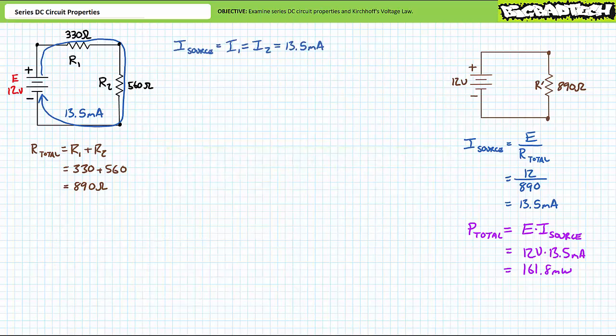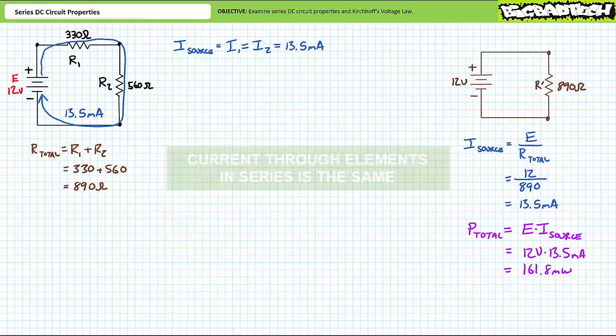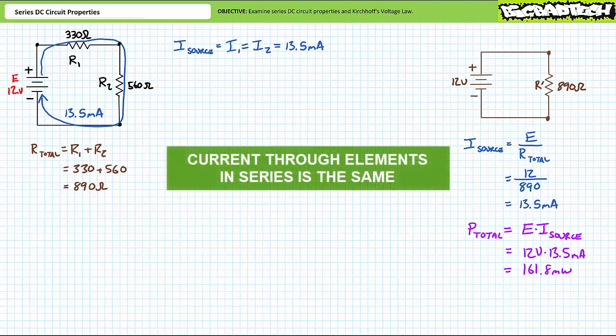Two: any current emanating from the source must travel through both resistors, implying that current anywhere in this single series path is the same. An ammeter inserted anywhere in the circuit would measure 13.5 milliamps regardless of placement. In short, current through elements in series is the same. I source equals I1, equals I2, and they all equal 13.5 milliamps. This is perhaps the most fundamental property of series circuits.